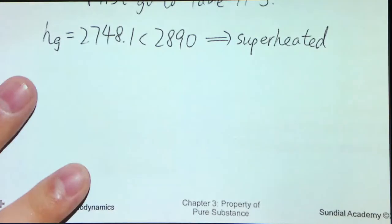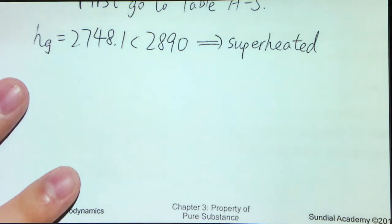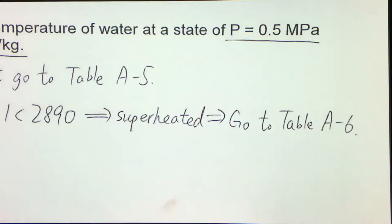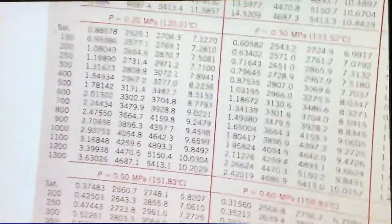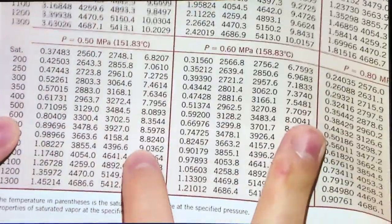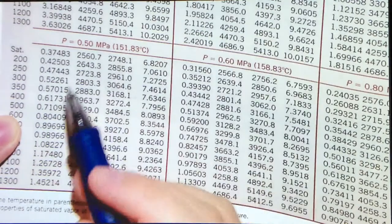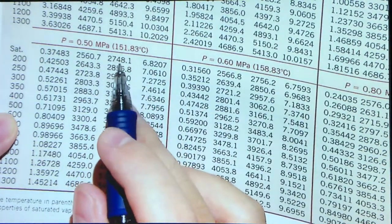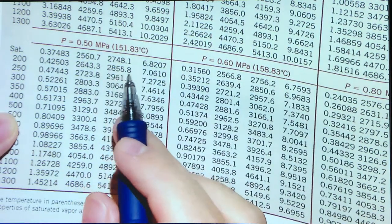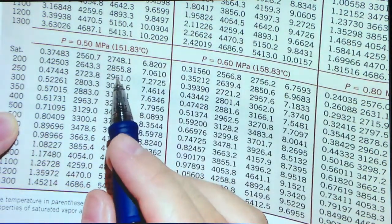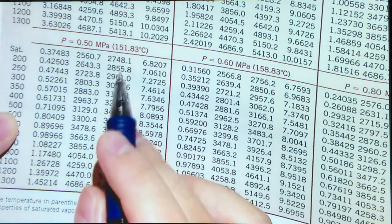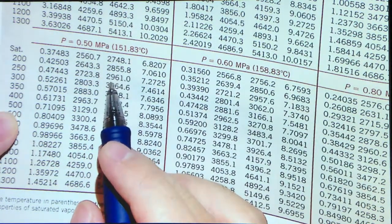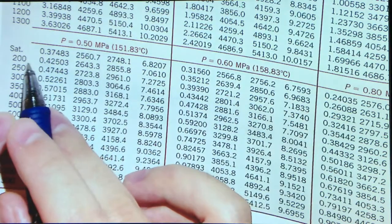So we know that it's superheated, so here we go to the superheated table. That means table A6. And because it's 0.5 MPa, we have this value for the saturated vapor. And our target value is 2890. This value lies between these two, 2855.8 and 2961.0. That means the temperature should be between 200 and 250.